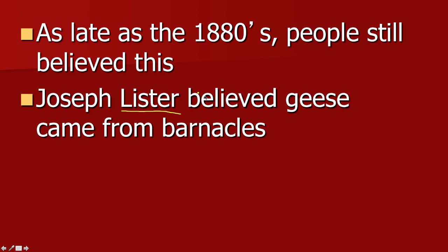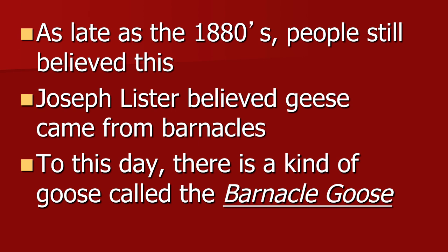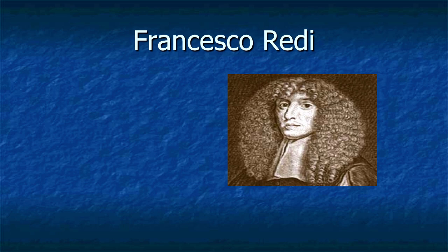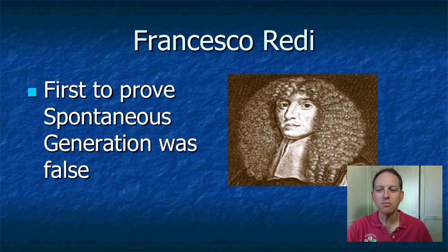In fact, there is something called a barnacle goose. Lister — that name sounds familiar — put an '-ine' at the end of it. Joseph Lister believed that geese came from barnacles, and to this day there is a kind of goose called a barnacle goose, which goes back to this old belief. Well, finally this guy came along — Francesco Redi — he was the first to prove that spontaneous generation was wrong.